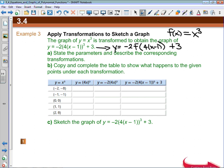So what I can do is I can identify the parameters A, B, H, and K. For this question, A is negative 2, B is positive 4, H is positive 1, and K is positive 3.